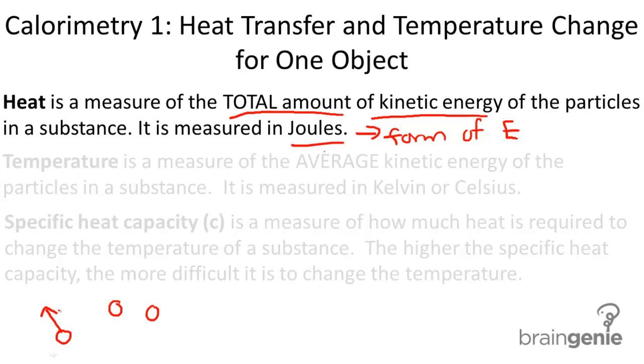The particles are moving at different speeds, different velocities. All together this substance with the three particles moving at different speeds has a certain amount of kinetic energy. The total kinetic energy in this system is the amount of heat in the system or in the substance.